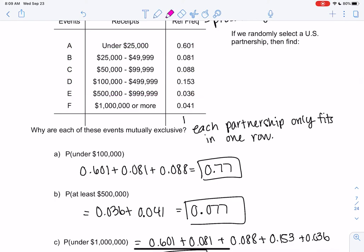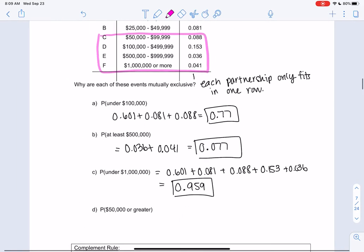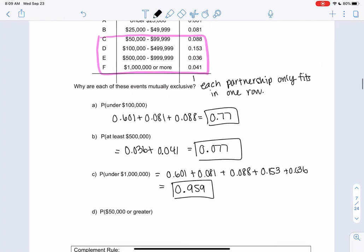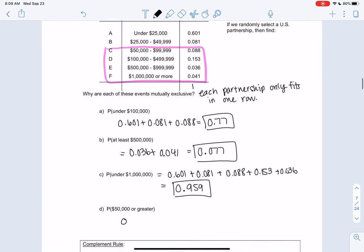A couple more. 50,000 or greater. So 50,000 is C or greater, which would be below. I'm going to shrink it just so we can see: 088, 153, 036, and 041. They're mutually exclusive, so we can add them. And hopefully we all get 0.318.